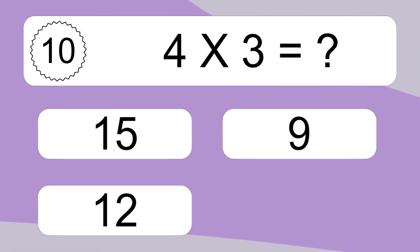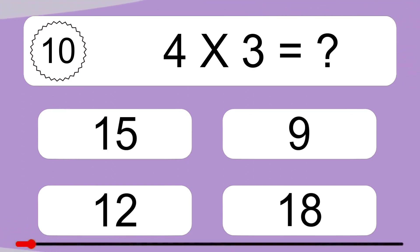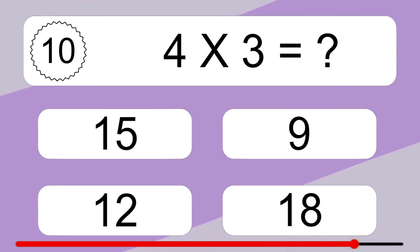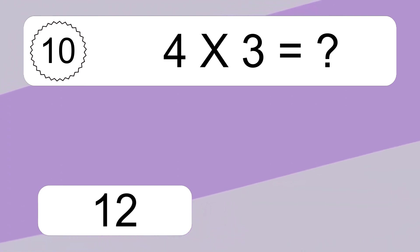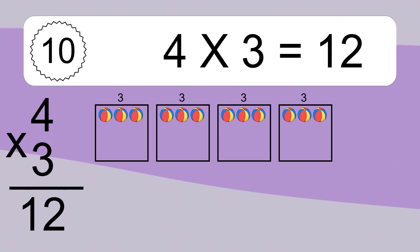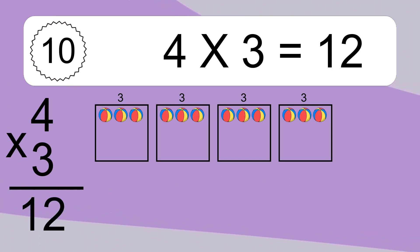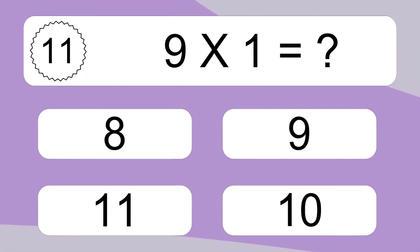4 times 3 equals what? 4 times 3 equals 12. We have 4 boxes, and each box has 3 colorful balls inside. If you count all the balls in all the boxes together, you will have 4 times 3 balls. This equals 12 balls. 9 times 1 equals what?